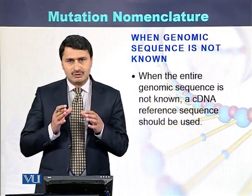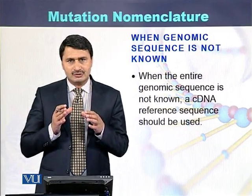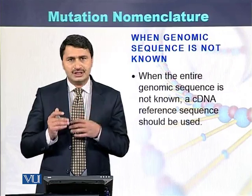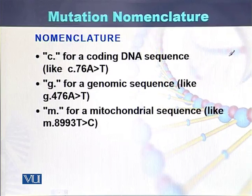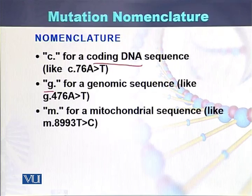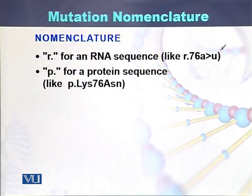When the genomic sequence is not known, cDNA sequence can be used in place of genomic DNA sequence. In the nomenclature for writing mutations or genetic variants: 'c' is used for coding DNA sequence, 'g' for genomic sequence, 'm' for mitochondrial sequence, 'r' for RNA sequence, and 'p' for protein sequence.